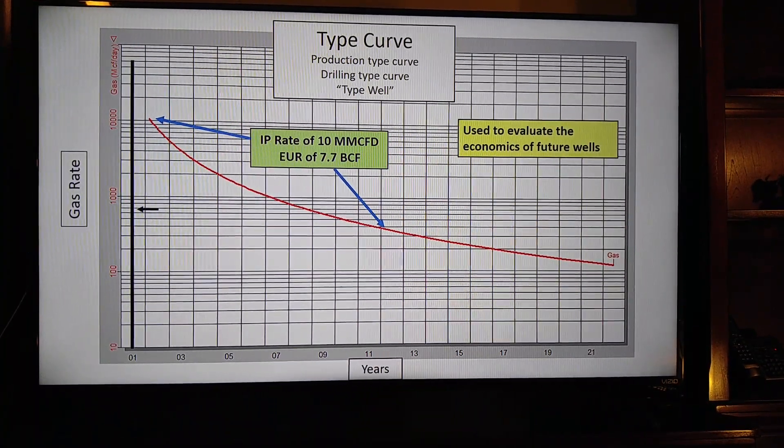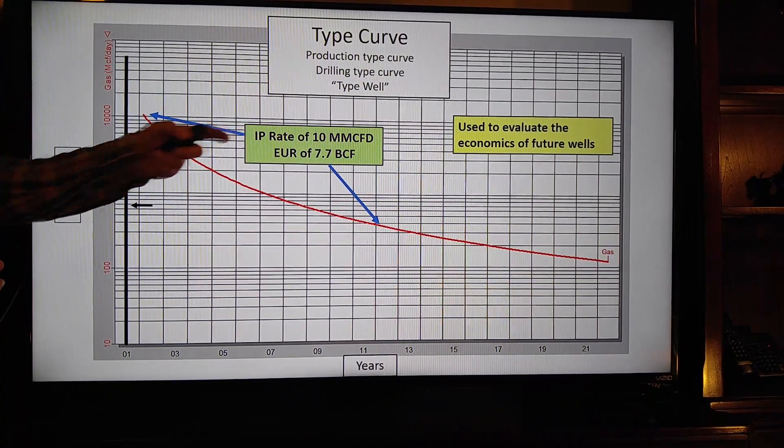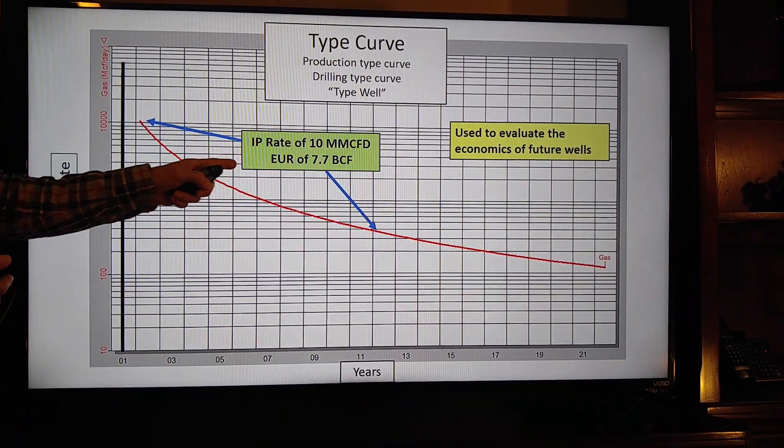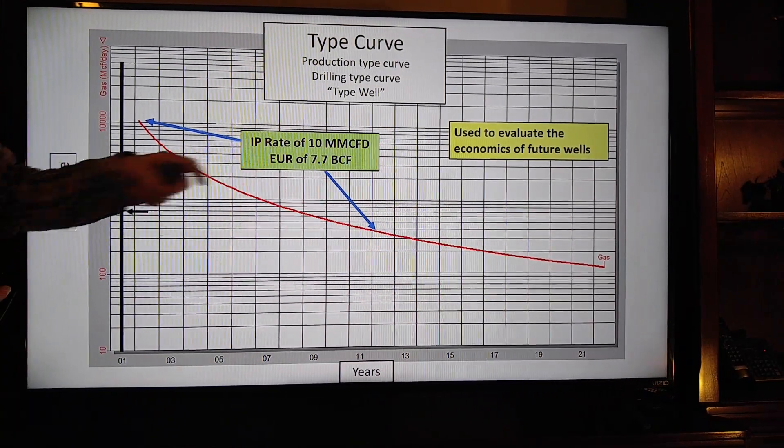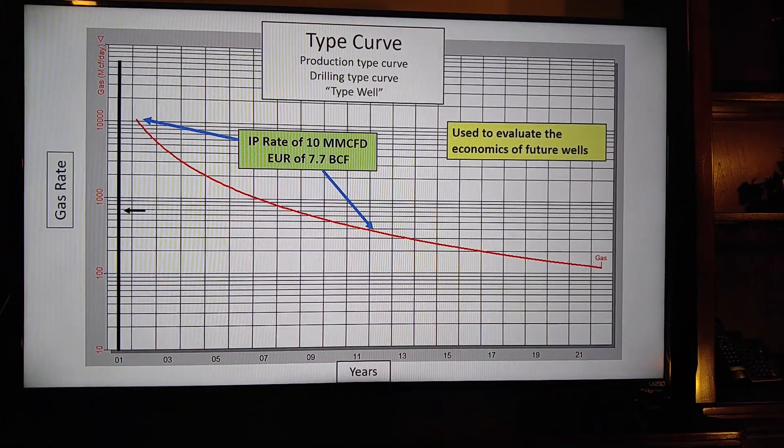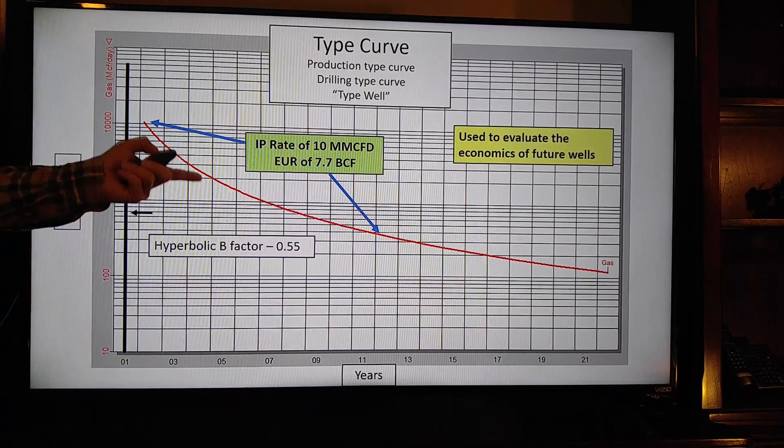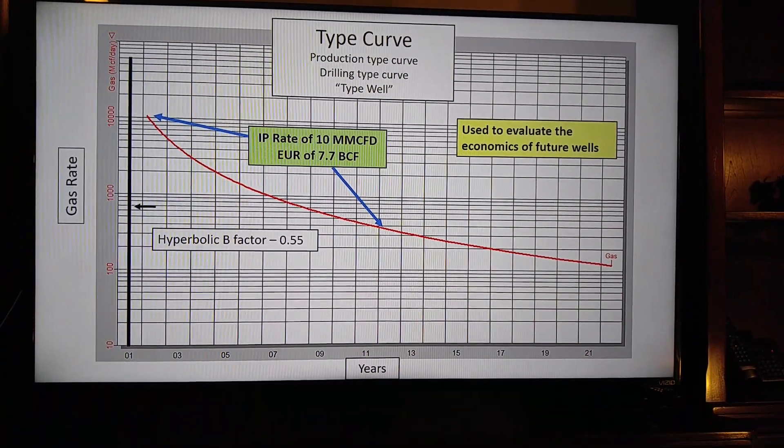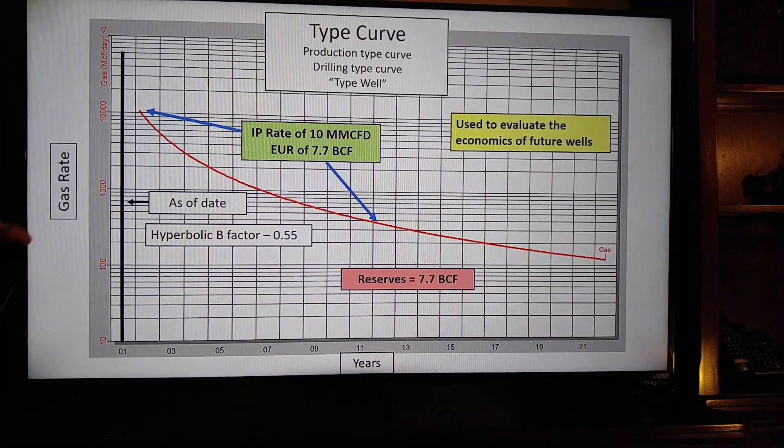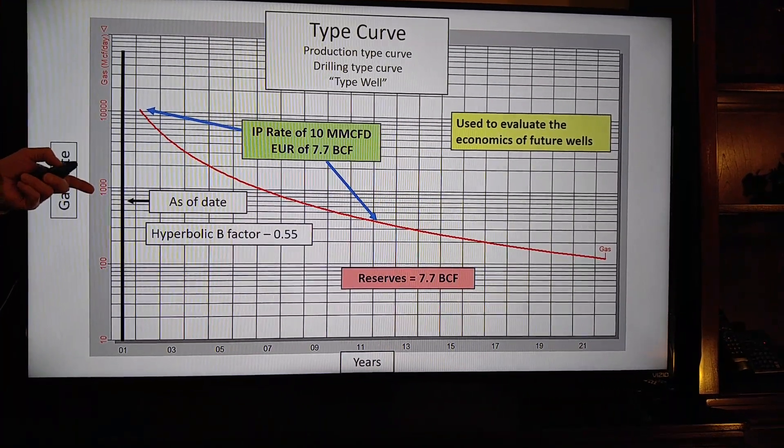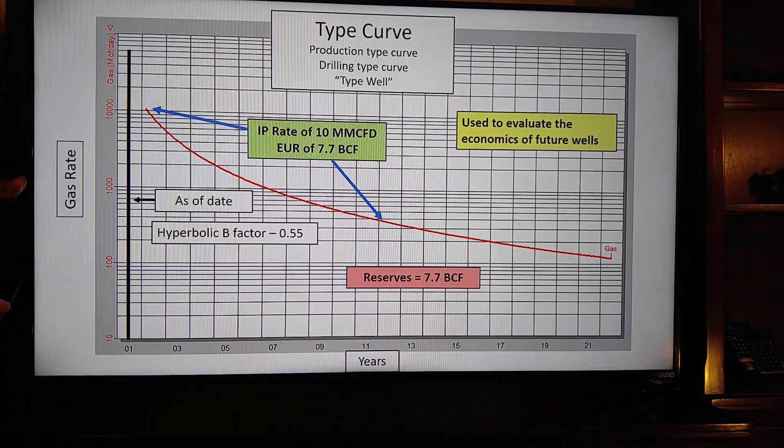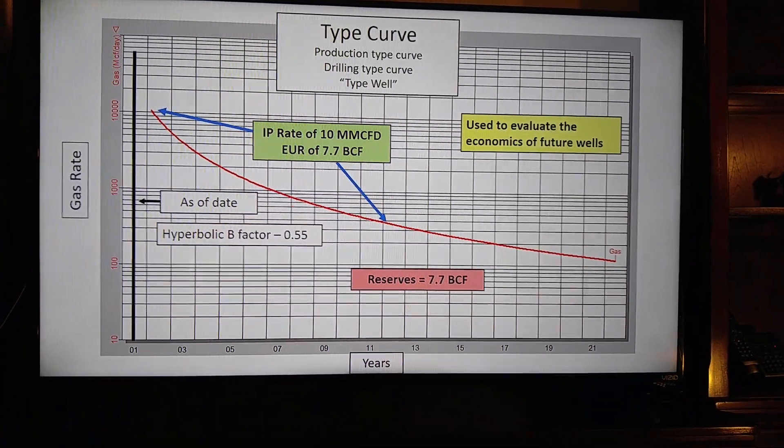What can we learn from a type curve? We can get the initial production rate—in this case it's 10 million a day—and the reserves that are going to be produced over the life is EUR of 7.7 BCF. We can quote the hyperbolic B factor, which describes the curvature of that line. That's important to a lot of people. The as-of date will be before you drill the well, and the reserves for this well are 7.7 BCF. So in this case, the reserves and EUR are the same.